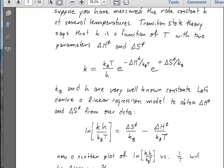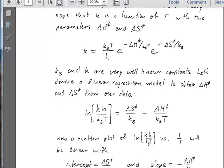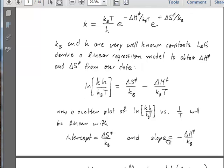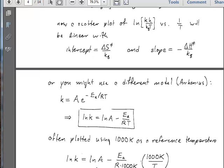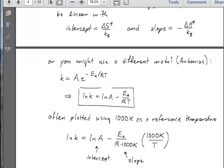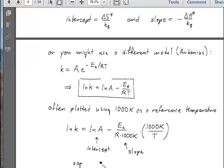What this equation suggests is that at least if transition state theory is correct, that a plot of the log of this K H over KBT function versus one over T will give a line with an intercept that is this delta S dagger over KB and a slope that is this delta H dagger over KB. This is actually how people process their data to get activation parameters for transition state theory.